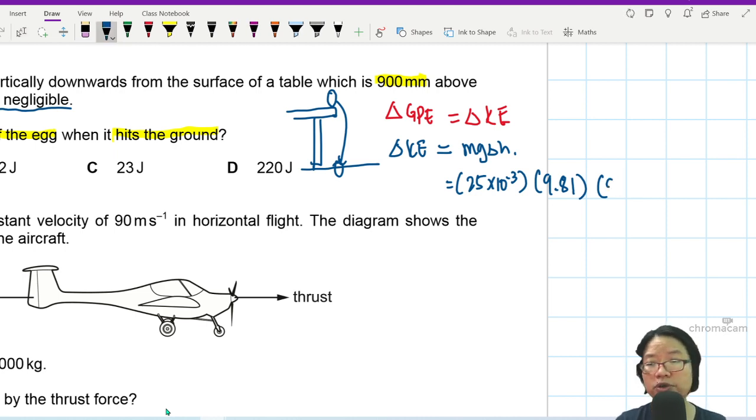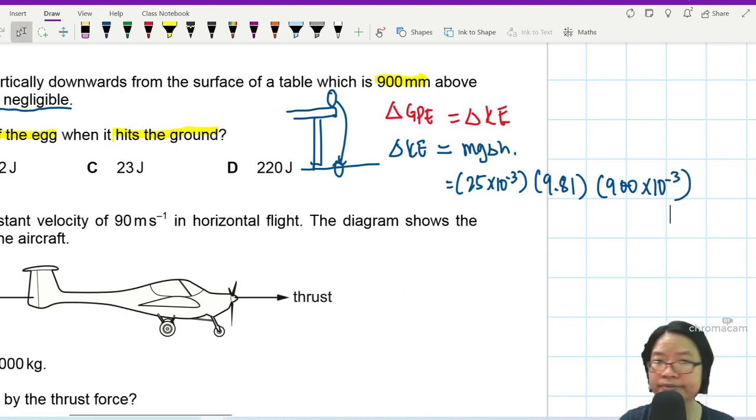If you don't know this is 0.9, you just go 900 times 10 to the power of negative 3. Don't make a prefix error.